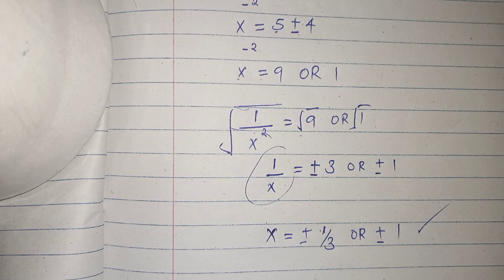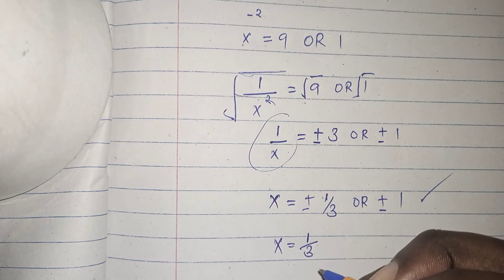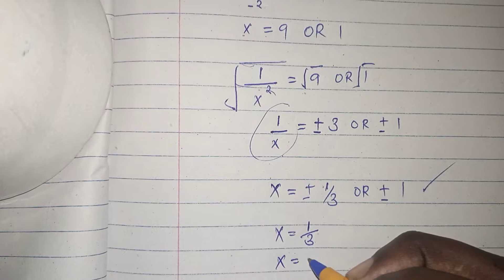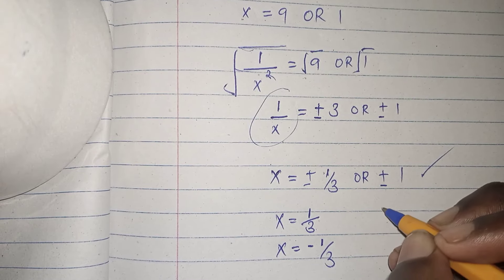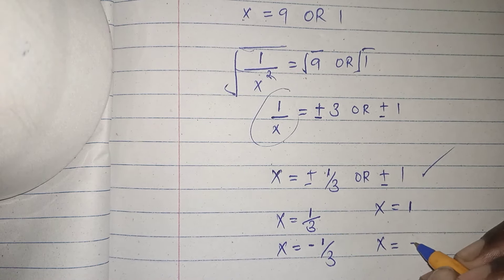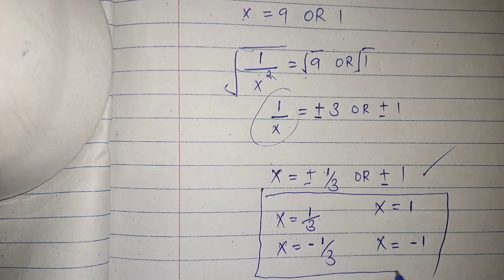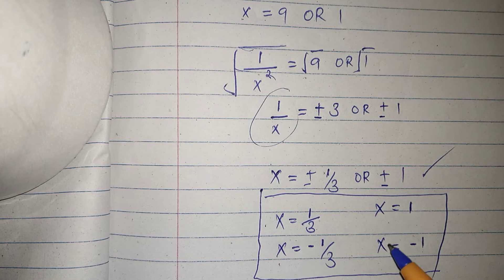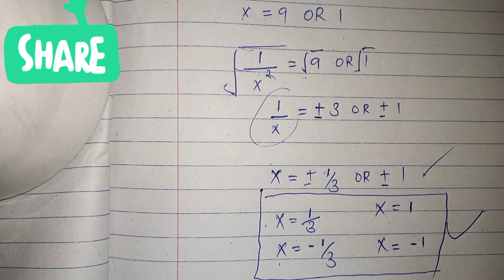This is our solution — we have four values of x. The first value is x equals one third, the second is x equals negative one third, the third is x equals 1, and the fourth is x equals negative 1. So we have one, two, three, four values of x. Remember to like, subscribe, and comment down below — bye bye, see you in my next video.